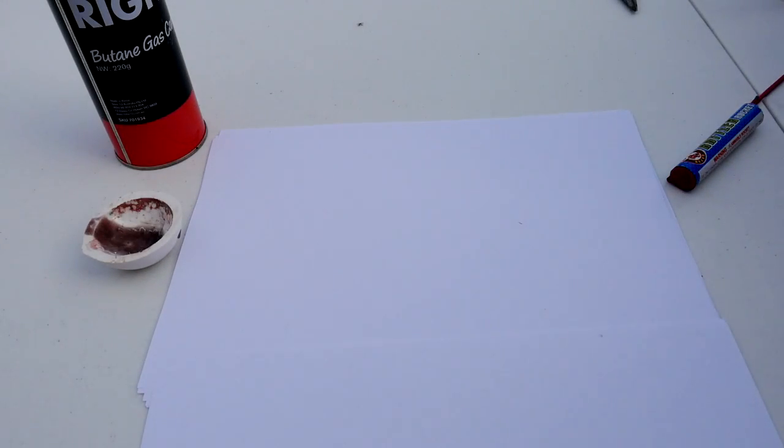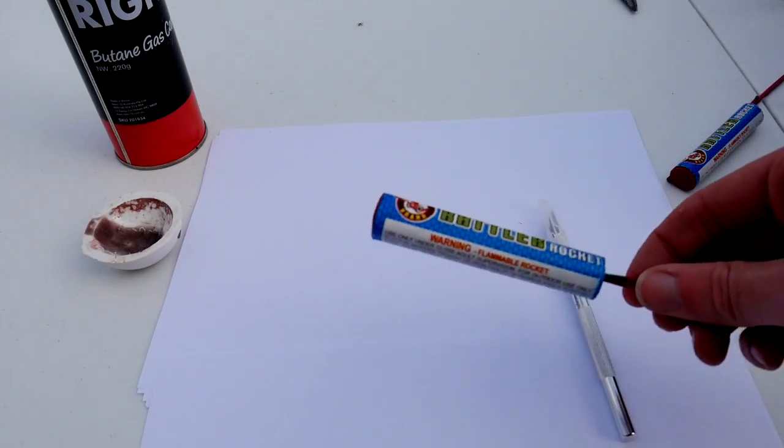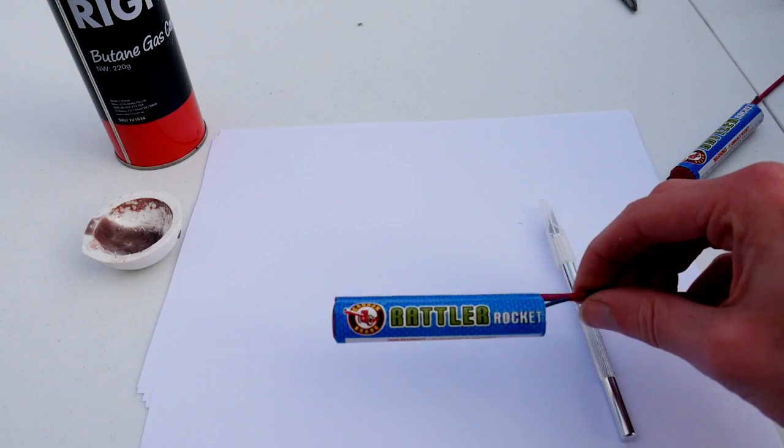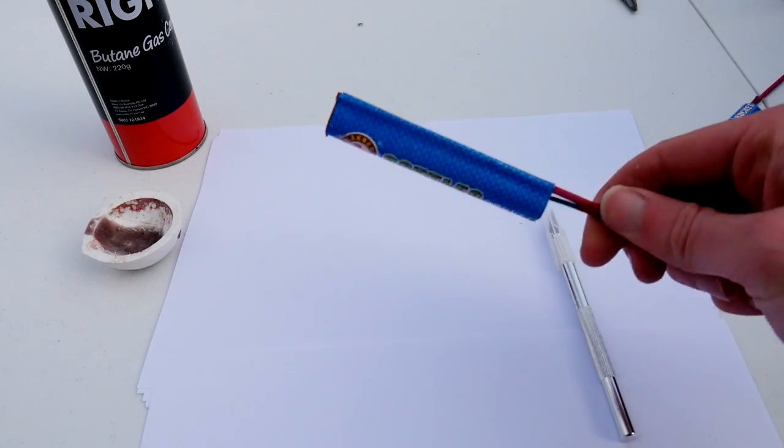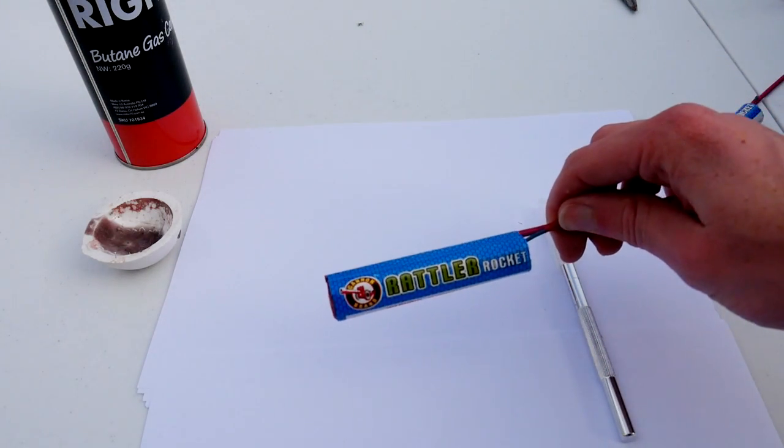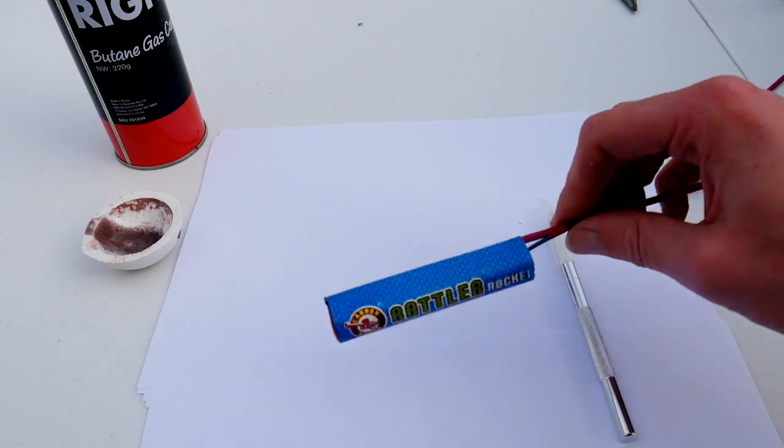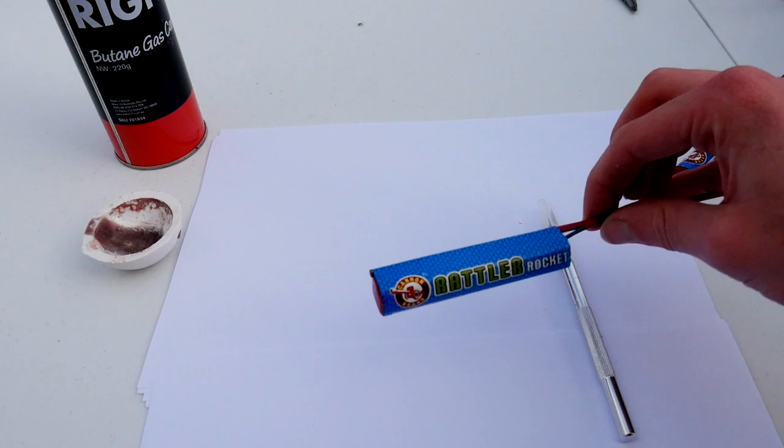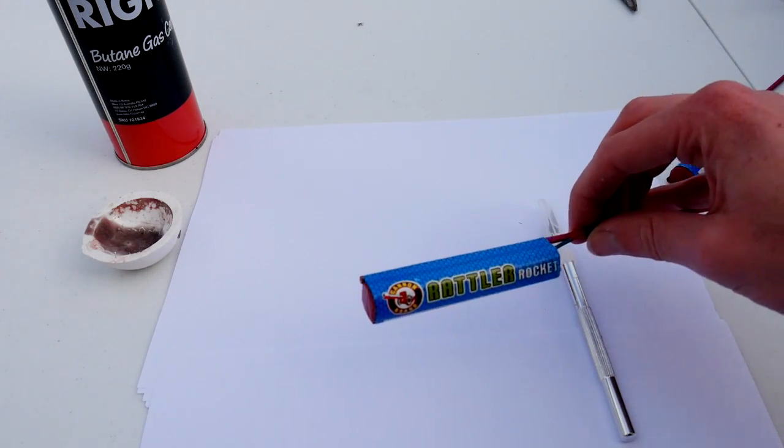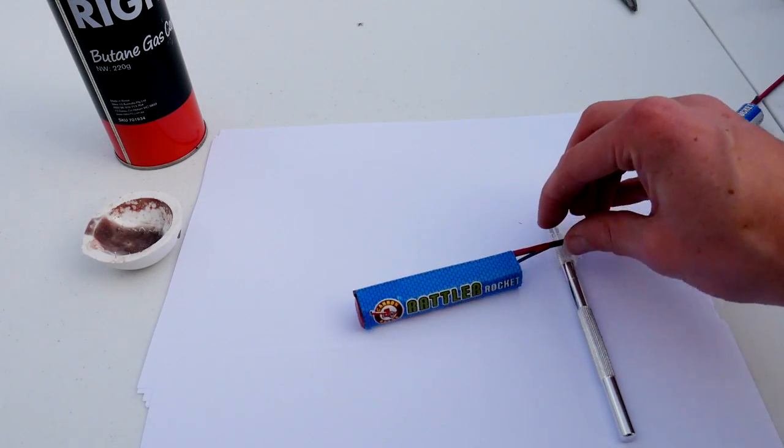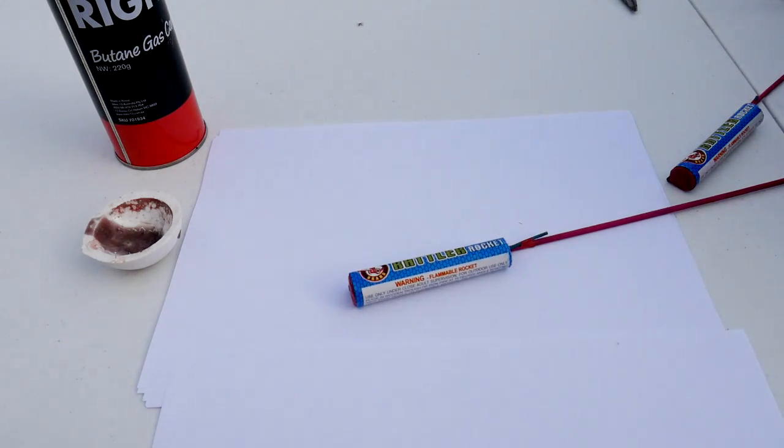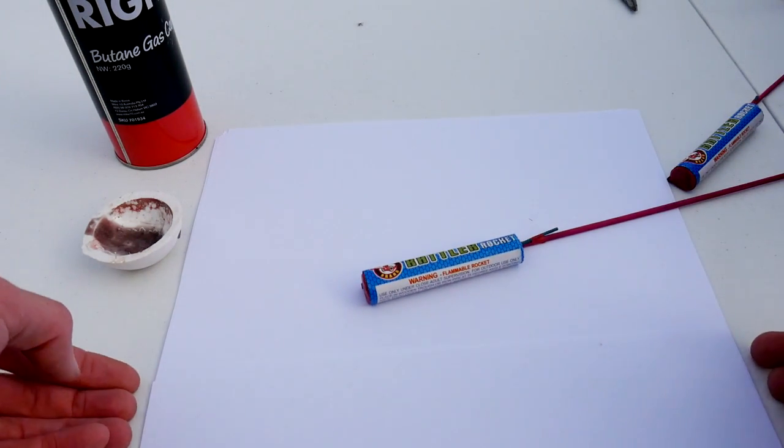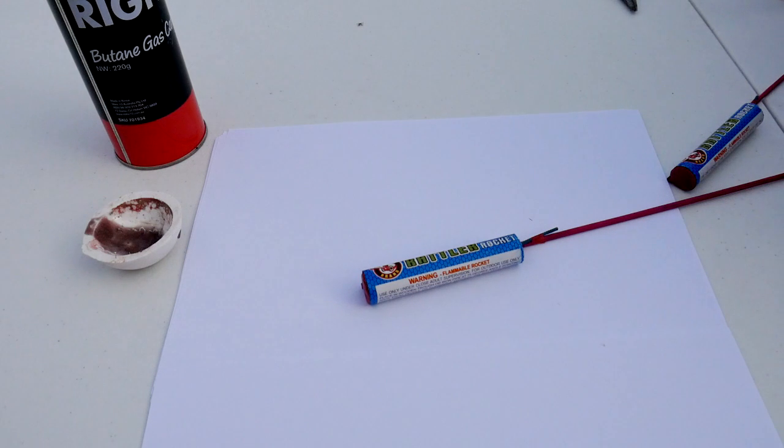Today we're going to be trying something a little bit different. We're going to be dissecting some model rockets and seeing what's inside of them. And eventually, hopefully, we'll be able to combine the powder from multiple rockets and make our own even bigger rocket and hopefully not blow myself up in the process. Although I'm pretty sure you guys would probably enjoy that if it happens, so I'll be sure to include that part as well.